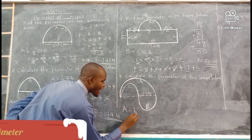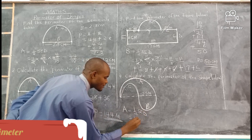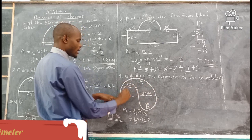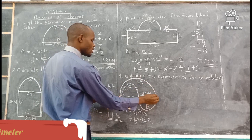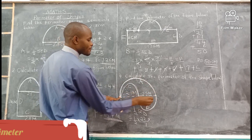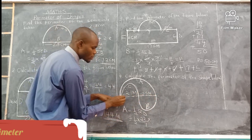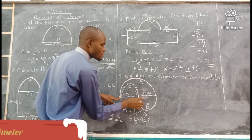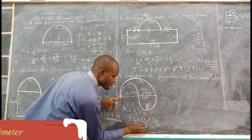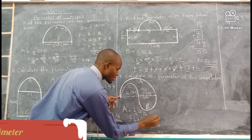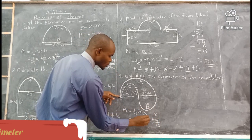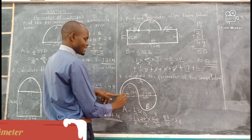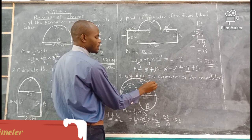Let's start with A. A equals half pi times diameter: half times 22 over 7 times the diameter of semicircle A. The diameter is the line joining the two ends of the semicircle — you are given 3.5 and 2.1 meters, so the diameter is 3.5 plus 2.1 equals 5.6. Convert to fraction: 56 over 10. Simplify: 56 divided by 7 gives 8; 22 divided by 2 gives 11. So 11 times 8 gives 88, over 10. Converted to decimal: A equals 8.8 meters.